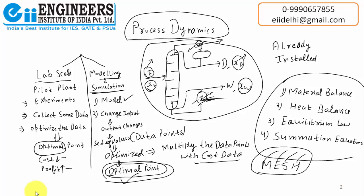The method of modeling and simulation is done entirely on the computer, so there is no fixed capital required, no need for a pilot plant, no need for an experiment. You just need to prepare a model, then change the input — that means change the data point — and you will get the change in output. Collect all those data points, multiply them with cost, and the point at which cost is minimum and profit is maximum becomes the optimal point. That is all the need of the subject.